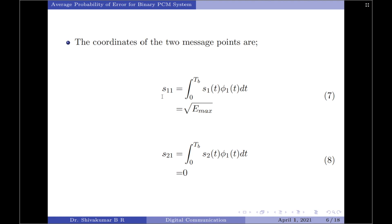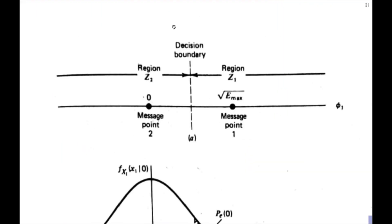The first signal point representing S1 of T is given by S11, which equals the integral from 0 to Tb of S1 of T times phi 1 of T dt, equaling root of E max. The second coordinate S21 is the integral from 0 to Tb of S2 of T times phi 1 of T dt, which reduces to 0 since S2 of T is 0. These two points are plotted on the signal space diagram: the message point for symbol 1 is at root of E max, and for symbol 0 at 0.